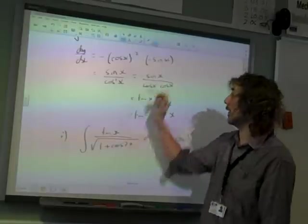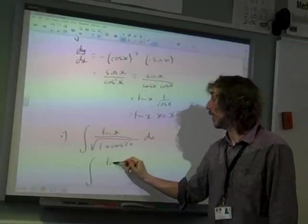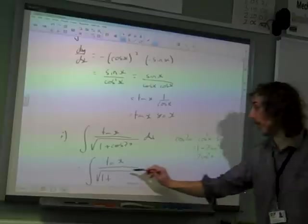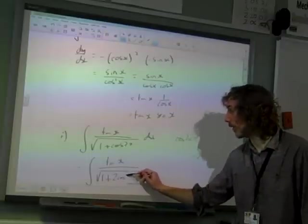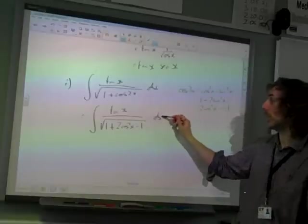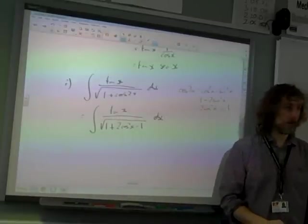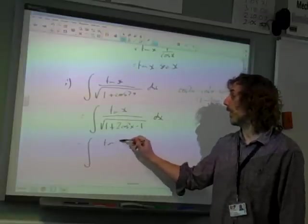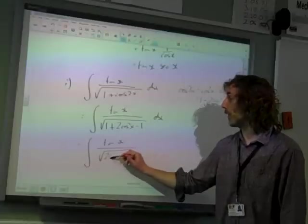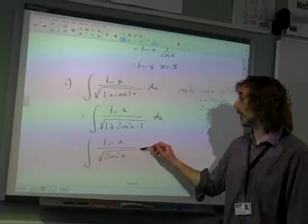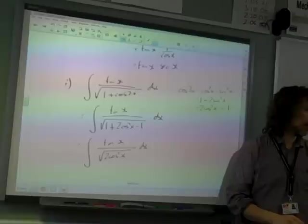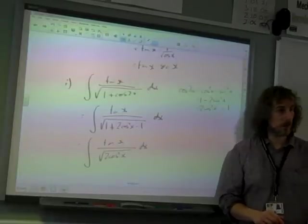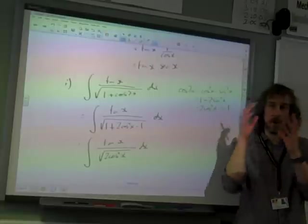And replacing cos 2x with 2 cos squared x minus 1. Well inside that square root sign we've got a plus 1 and a minus 1, so they get rid of each other. That's tan x over the square root of 2 cos squared x. Can you see the plus 1 and a minus 1 have gone?